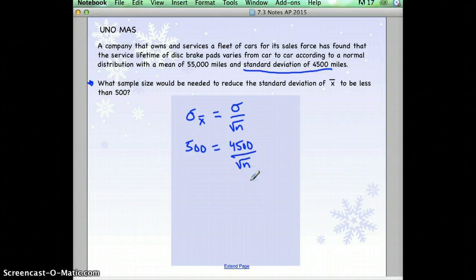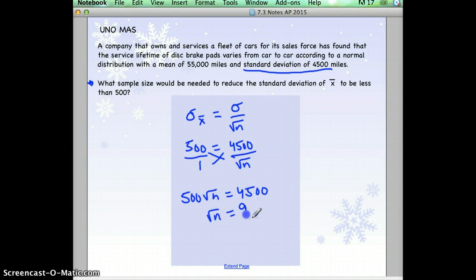So we're going to solve for n. So cross multiply, put that over 1 and cross multiply, 500 times the square root of n would equal 4,500. Okay, divide 4,500 by 500 and you get a 9. Now, be careful, n is not 3. Is the square root of 3, 9? No. You'd have to square both sides to get n alone.